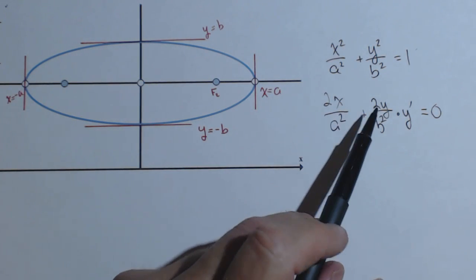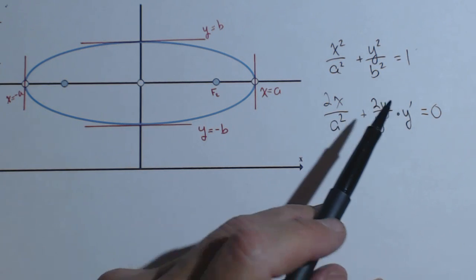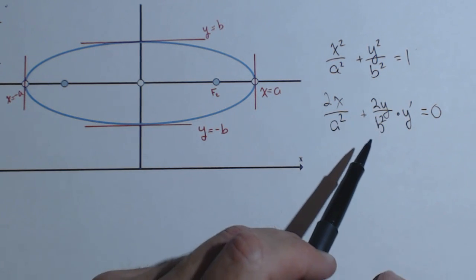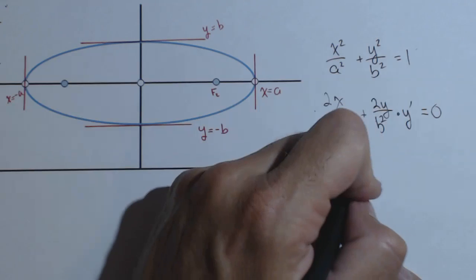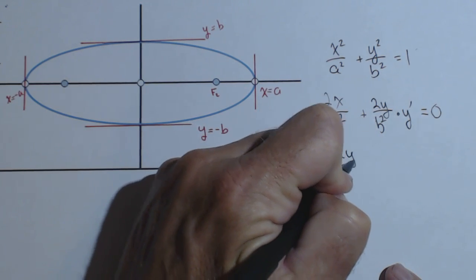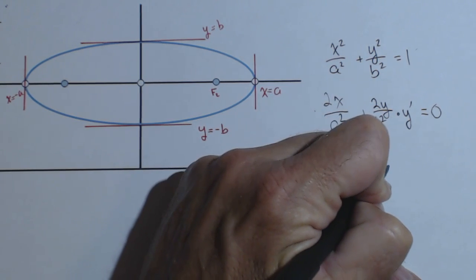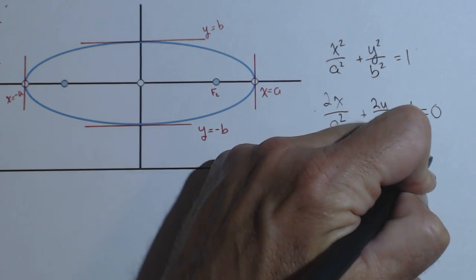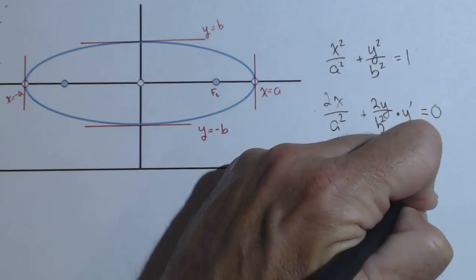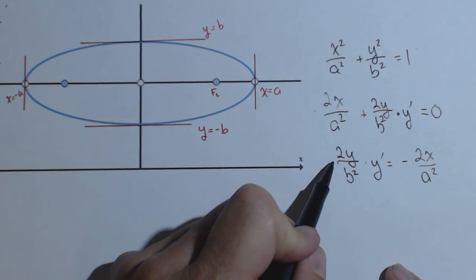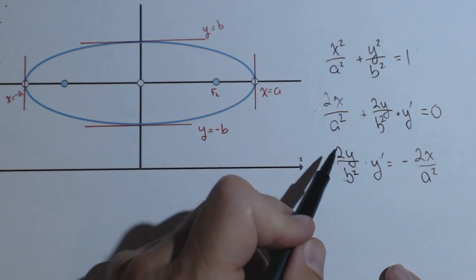Now when we go to solve this, we want to solve for y prime. Some people like to use dy/dx here, that's fine too. I'm going to subtract this term over to the other side, so I'll have 2y over b squared times y prime equals negative 2x over a squared.